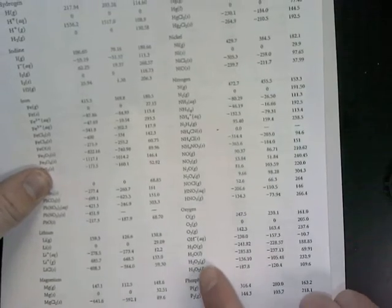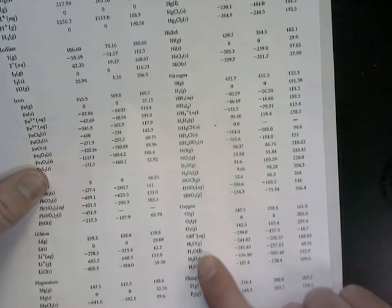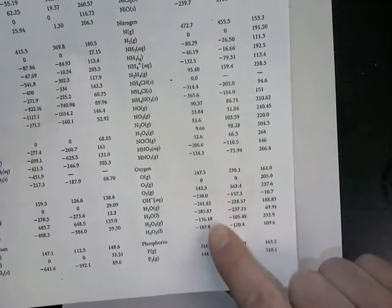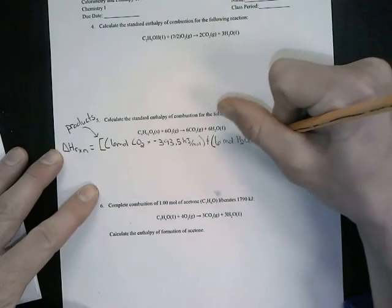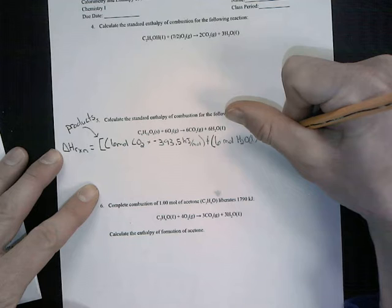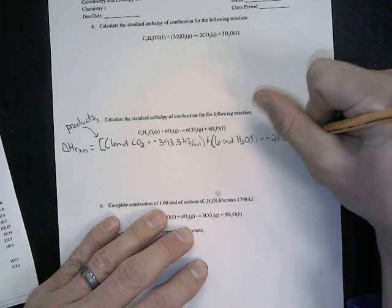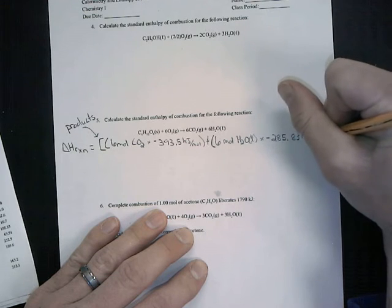So we scroll through our chart, and we'll have to turn a few pages here, but we scroll through our chart until we get to H2O as a liquid. It is located down here. H2O is a liquid. Remember, the first chart is what we want, or the first column, delta H. That value there is negative 285.83. So we're going to multiply by negative 285.83 kilojoules per mole.